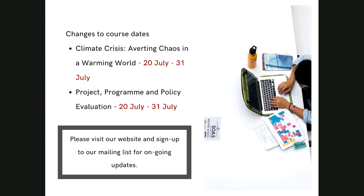Because we've switched to online teaching, there have been some changes to course dates. Some courses share conveners — climate crisis shares the same convener as politics of protest, development and social change. We've moved climate crisis from session one to session two, so it will now take place from 20th to 31st July, meaning you can take part in both courses. We've also had changes to the project programme and policy evaluation course, which has also moved from session one to session two. I'd really recommend double-checking on our website before applying — we have a table specifying which courses take place in which sessions.